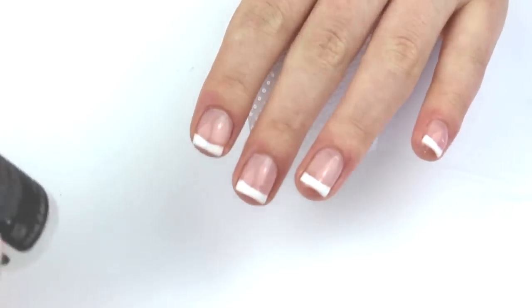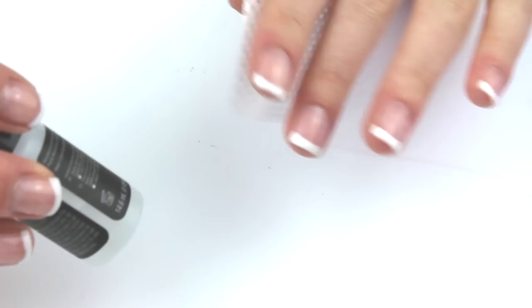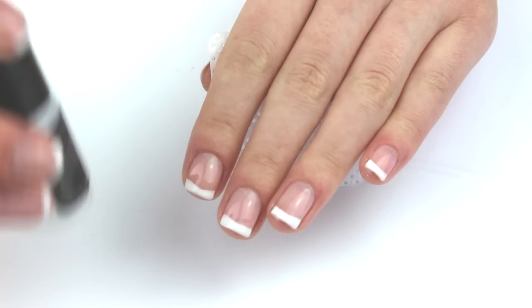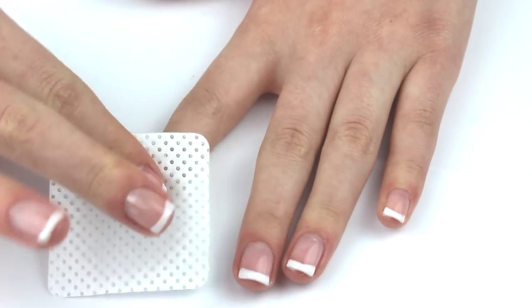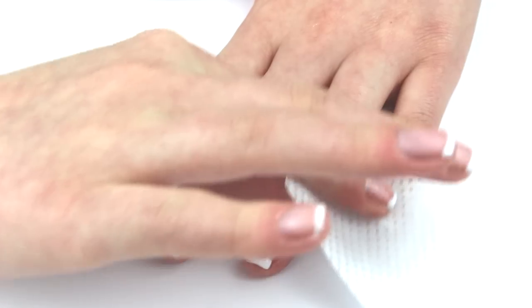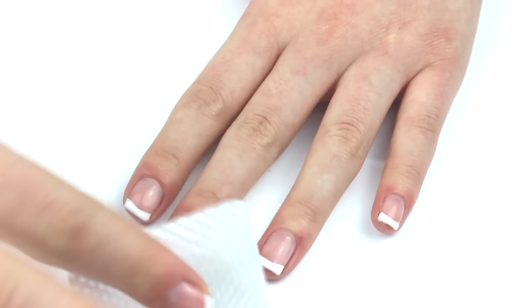So the last thing I'm going to do now is cleanse my nails with the gel cleanser again and a lint free wipe all over my nails to remove the sticky layer that's left behind when you cure your nails under the lamp. I'm just going to gently wipe that over every nail to remove the sticky layer and reveal the shiny gel manicure which is completely dry.